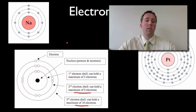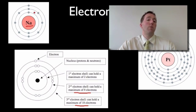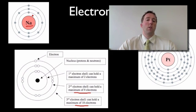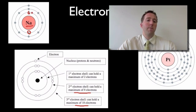This atom of sodium has 11 electrons altogether. Electrons fill the shells closest to the nucleus first. So the first electron goes into the first shell, the second one goes into the first shell too, but then the first shell is full — it can only hold two electrons.